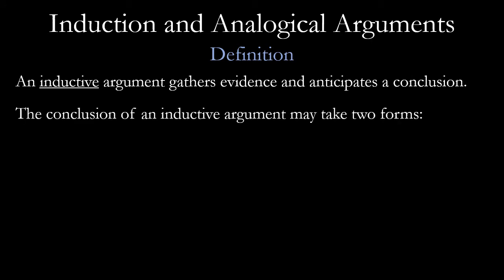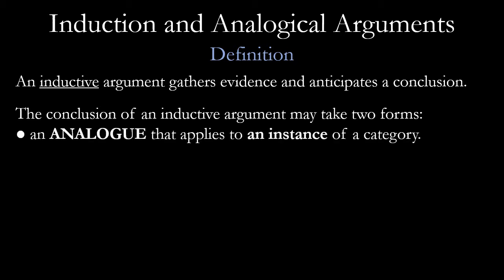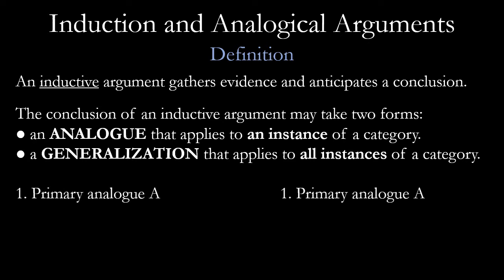The conclusion of an inductive argument could take one or two forms. It could be an analog that applies to the next instance after a number of examples, or it could be a generalization that applies to all instances of a category. Here we are avoiding the fallacy of hasty generalization. We're trying to ensure that we're making a reasonable, justified generalization, and we're going to talk about how we do that in this video.